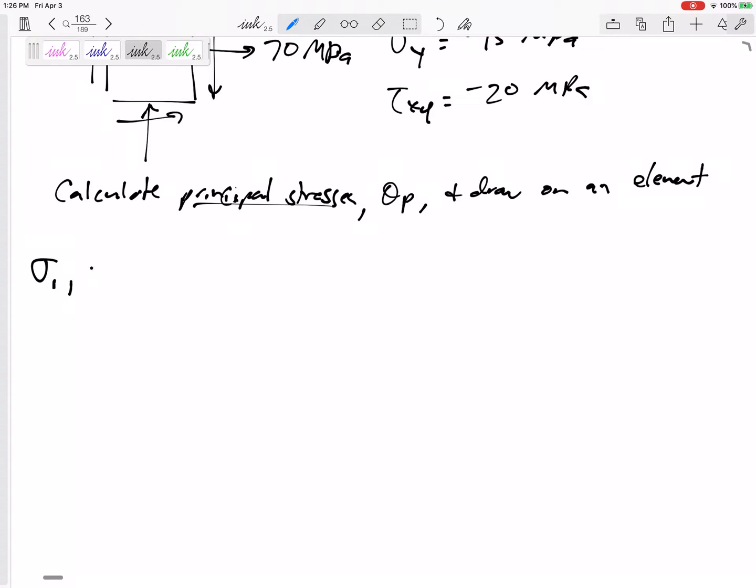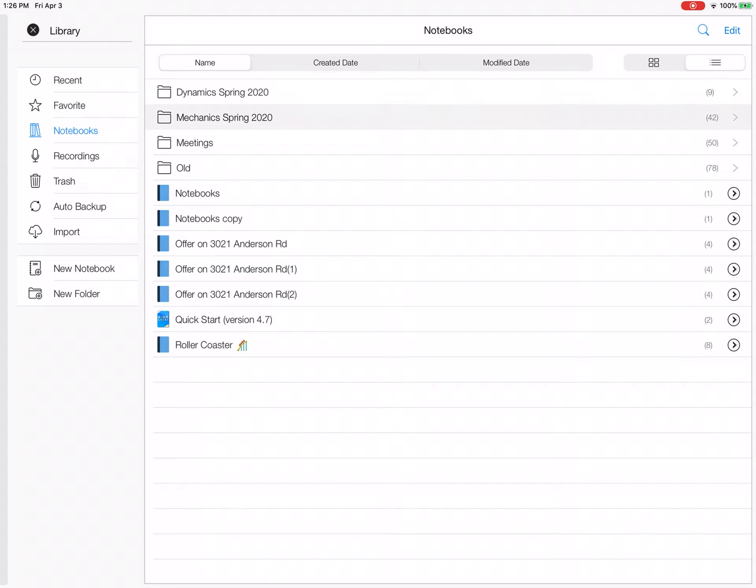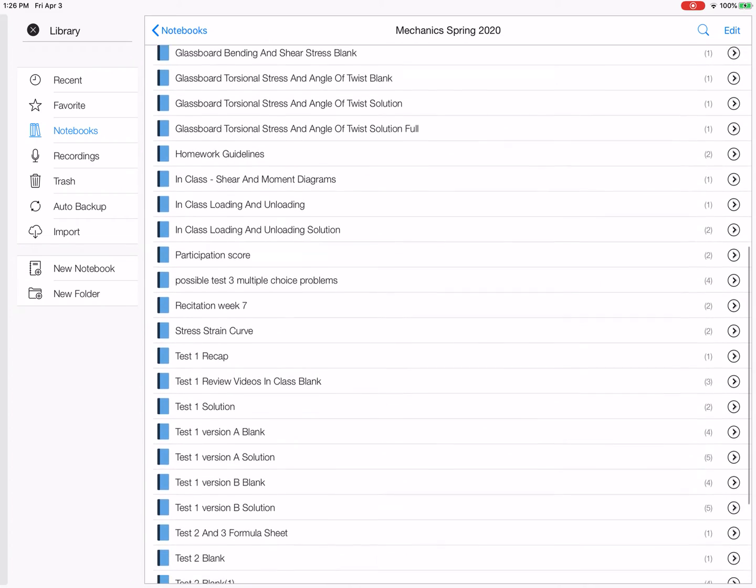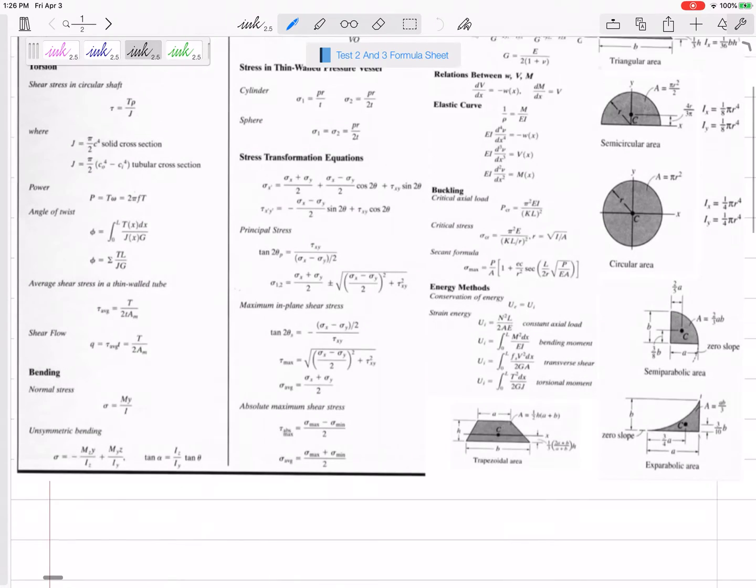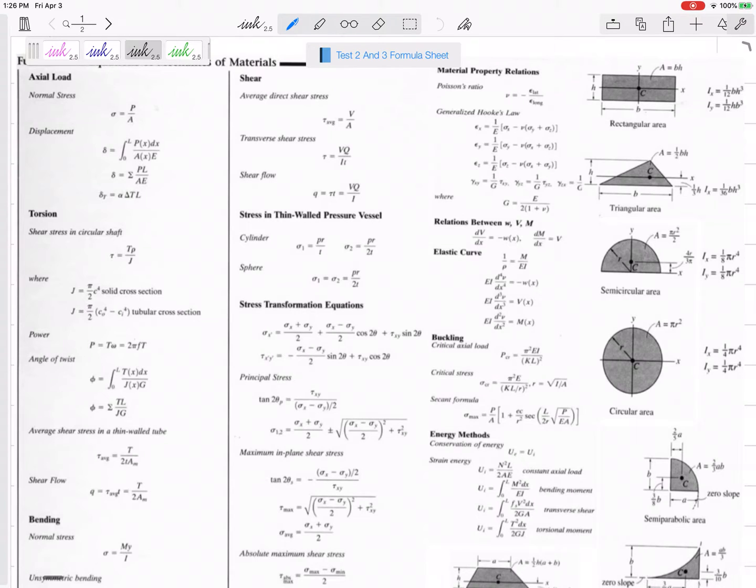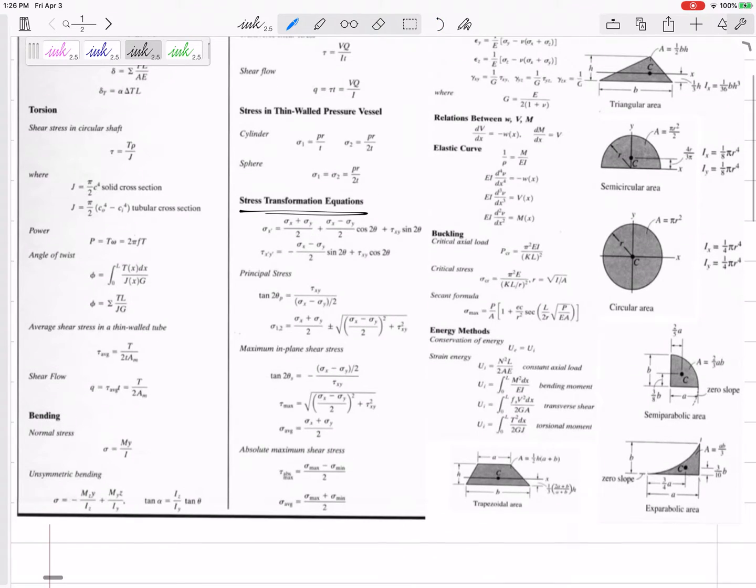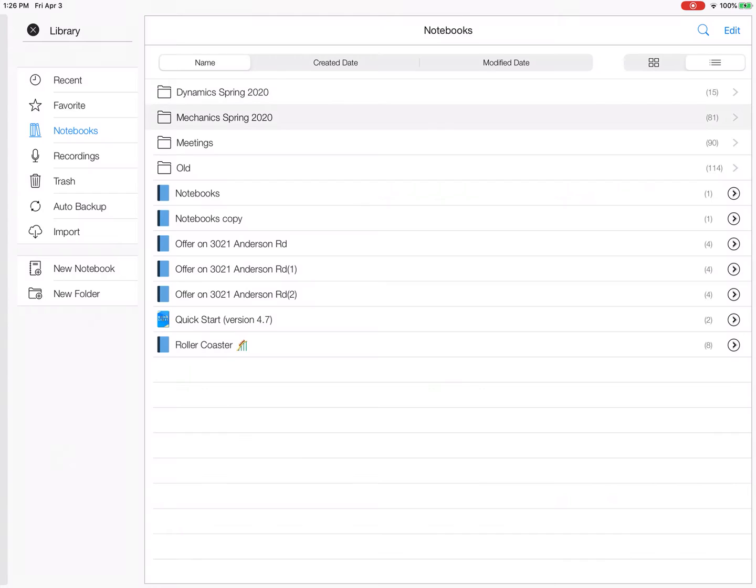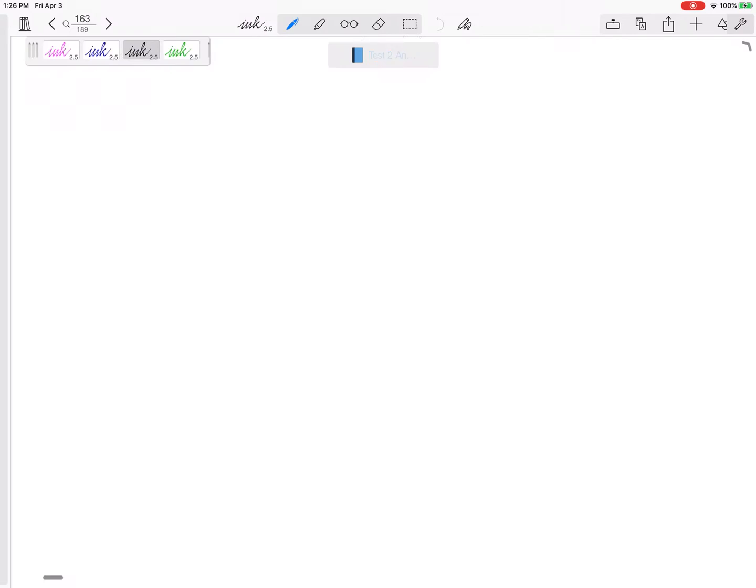Which one do you want to start with? We can do the principal stresses, sigma 1 and sigma 2. We have an equation that we derived; it's on our formula sheet here. I pulled up our formula sheet this time. This was the formula sheet for test two and it will be for test three. Here are our stress transformation equations, all of this right here. And the principal stresses can you read: the sigma x plus sigma y divided by two, plus and minus the square root of sigma x minus sigma y divided by two quantity squared plus tau xy squared.